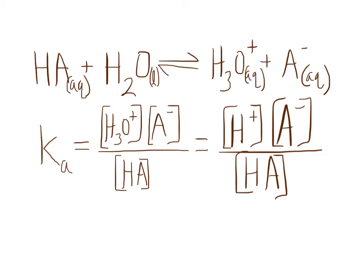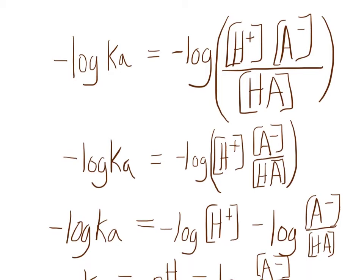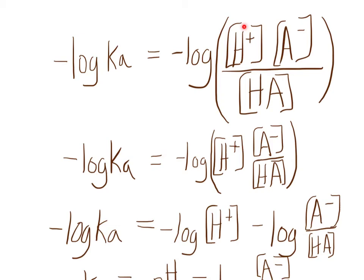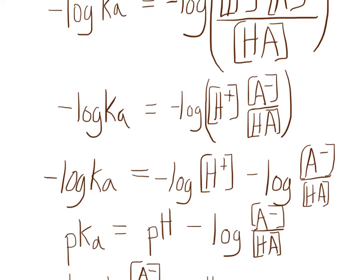Now what we do to derive the Henderson-Hasselbalch is that we take the negative log of both sides, negative log of Ka and the negative log of this whole thing right here. And then on this next line, all I've done is at the top we have H+ times the conjugate base divided by the acid. I just separated it out and put H+ times the conjugate base divided by the acid. Same exact thing, it's just to make it easier for what I'm about to explain.